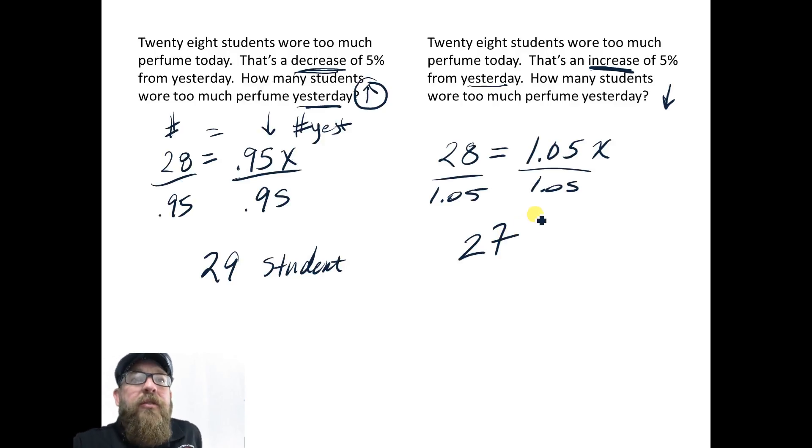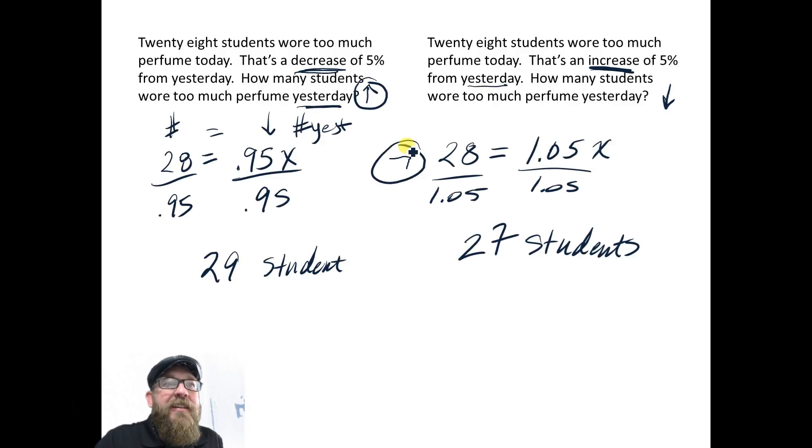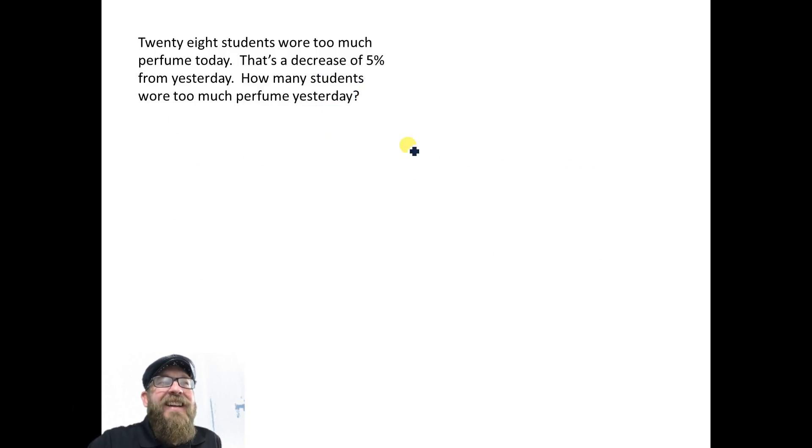Well that would be 27 students because you have to round to the nearest whole number. 27 students is a decrease, and that was also expected. So the thing I'm trying to get you to see here is that if you set up the equation, it makes life easy.